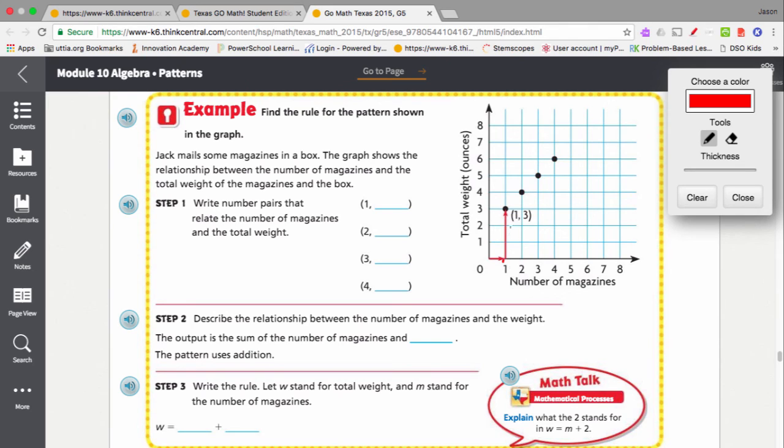So, we follow the same pattern here, the same procedure. Start with x equals 1, y equals 3. x equals 2, y equals 4. x equals 3, y equals 5. And x equals 4, y equals 6.